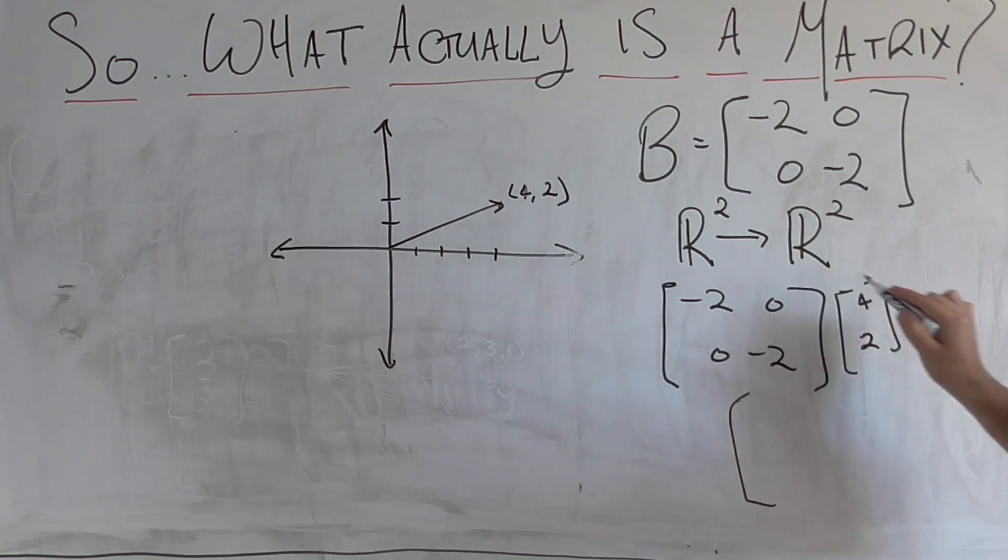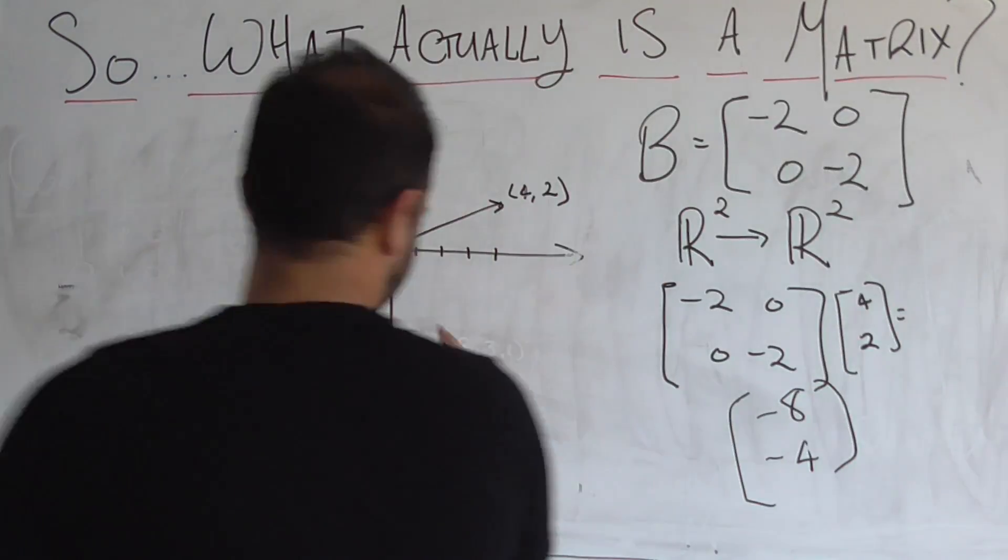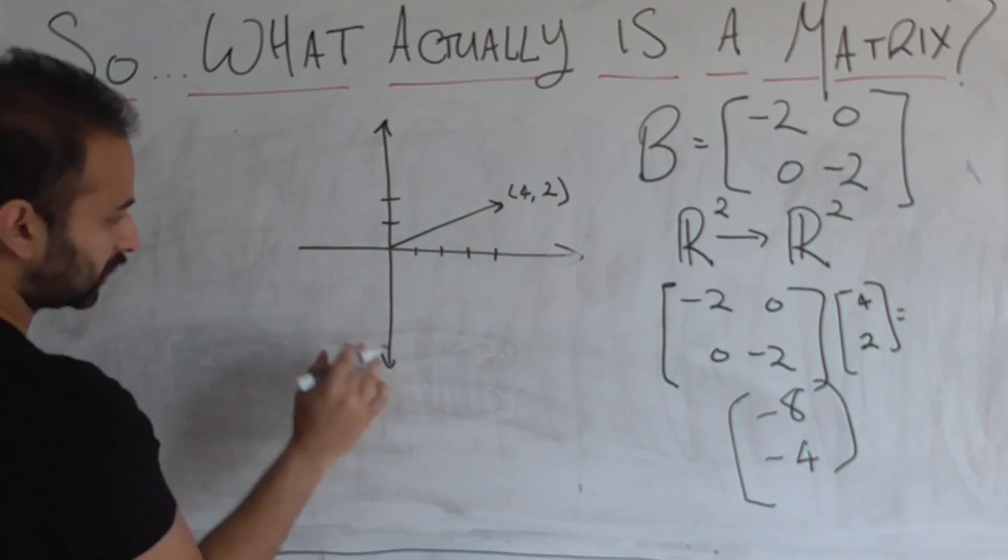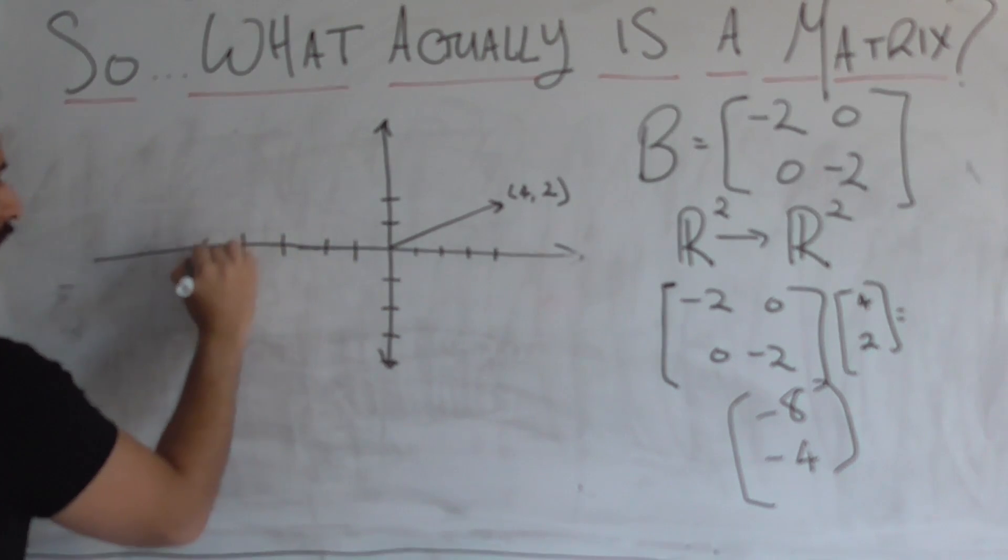So we're going to get back negative two times four is negative eight. This is zero. Zero times four is zero. Negative two times two is negative four. So the vector we get back is at minus eight and negative four. So let's see, one, two, three, four. One, two, three, four, five, six, seven, eight. All the way over there.